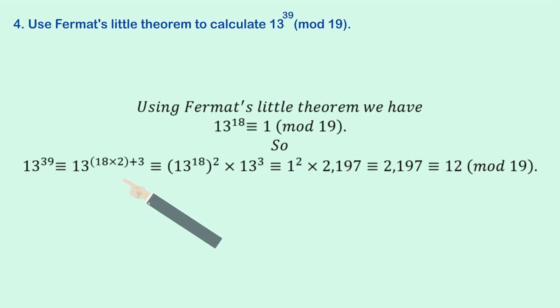And here we can use a similar sort of trick, but here we recognise that 39 is, you can see down here, it's 2 times 18, which is 36, plus 3. And once again, we can use the exponent rules or power rules that you learned in high school to split that into the product of 13 to the 18 all squared times 13 cubed.